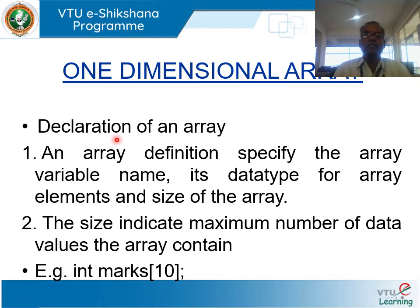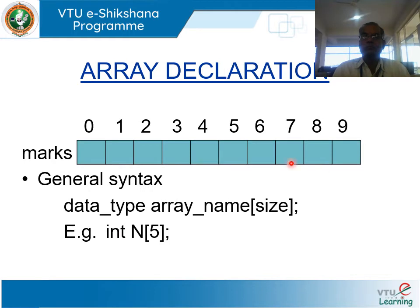The declaration of a one-dimensional array specifies the array variable name, its data type for array elements, and the size of the array. The size indicates the maximum number of data values the array contains. For example, int marks[10]: int is the data type, marks is the name of the array, and 10 is the maximum number of integer elements. The general syntax is: data_type array_name[size]. For example, int n[5], where n is the array name and 5 is the size, meaning n contains 5 integer elements.